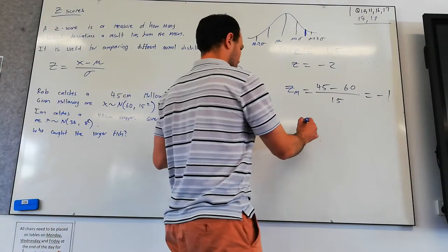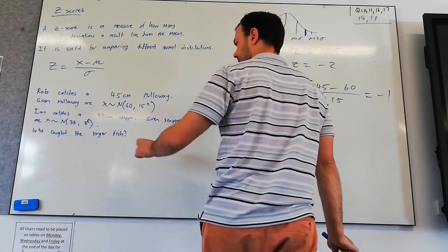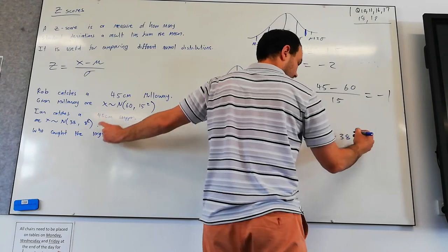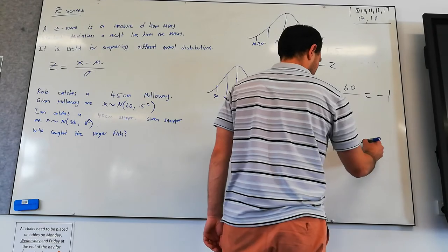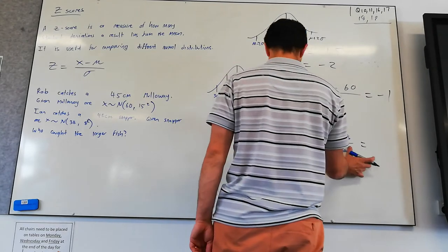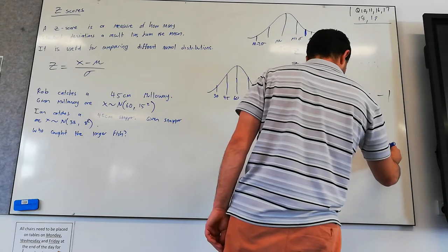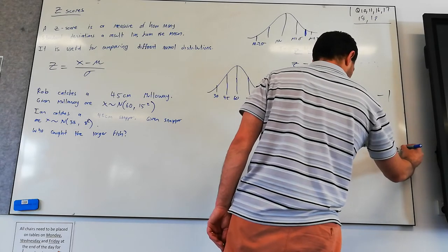The z-score for snapper is going to be 48, so his result. Take the mean, the mean of snapper is 38, divided by the standard deviation of snapper, which is 8. So we've got 10 on 8, 1.25.